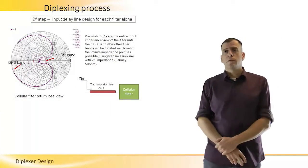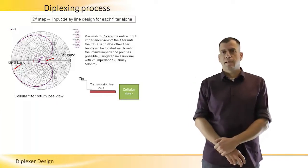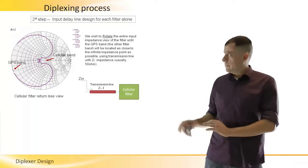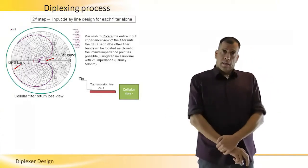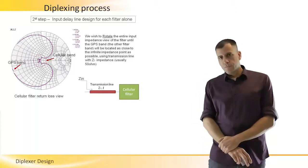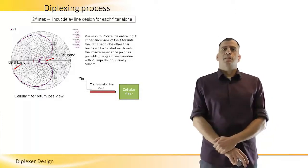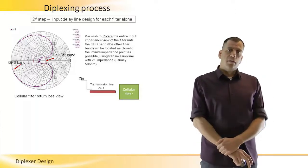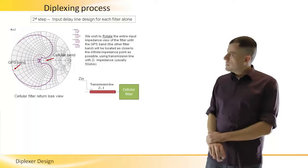In this example, I have designed two filters with 200 MHz bandwidth each, as can be seen here. Next thing we do is designing a delay line at the input of each filter alone. Let's look at the cellular band filter.